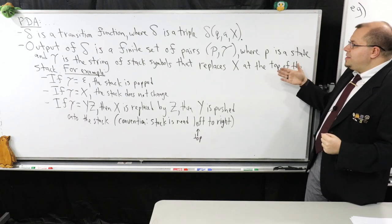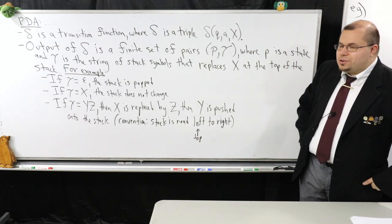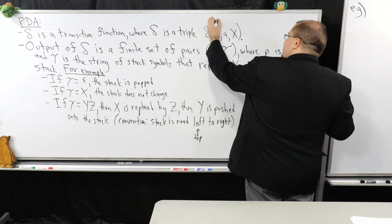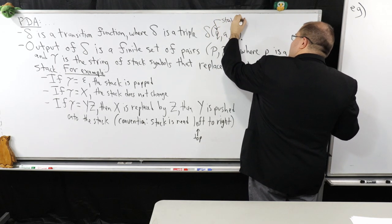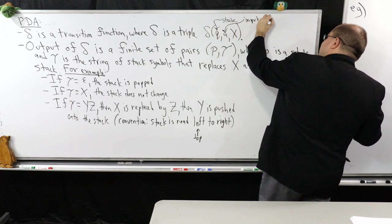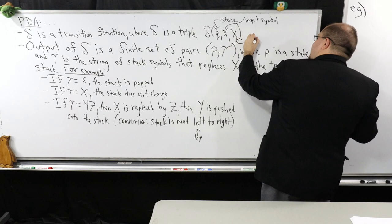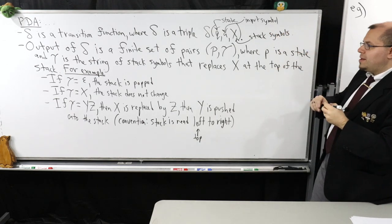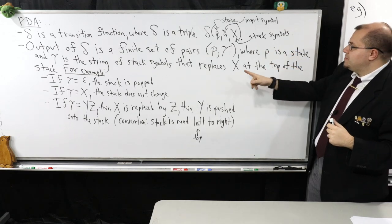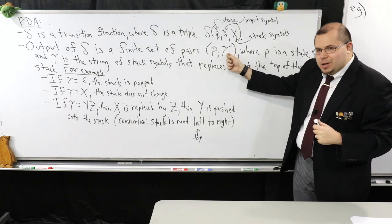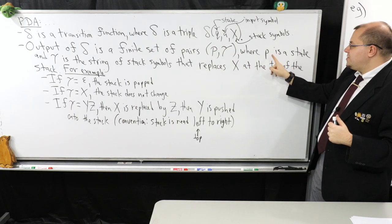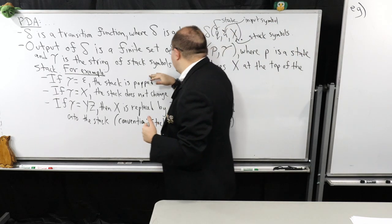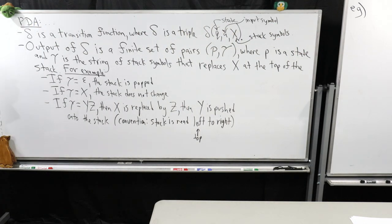So what do I mean by the transition function? Recall it's a triple: q, a, and x. Q is a state, a is an input symbol, and x is a stack symbol — we have a set of stack symbols. The output of this will be a finite set of pairs: p and gamma (lowercase gamma), where p is the state you're transitioning to, and gamma is the string of stack symbols that replace x at the top of the stack.